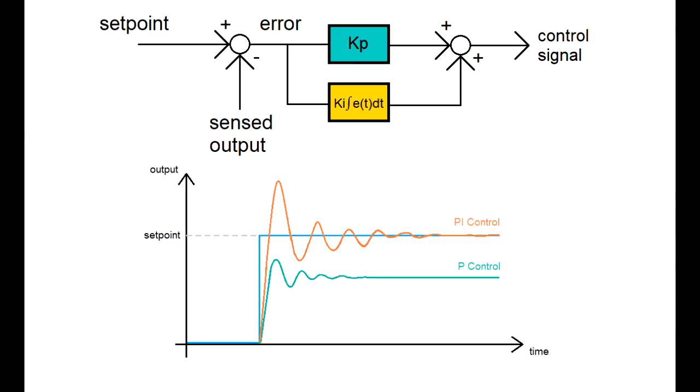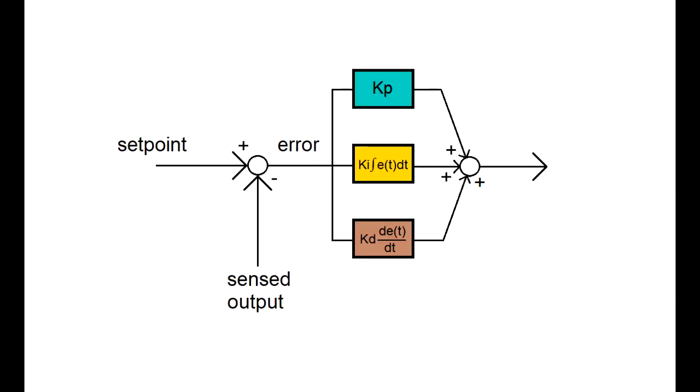So in the last lecture, we ended with showing how a PI controller eliminates the steady state error through the integral term. But we also made it clear that neither the P term or I term can contribute to actively dampening the overshoots. This is where the derivative term comes into play.